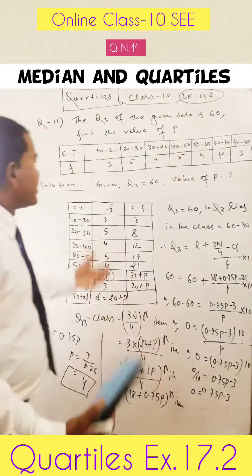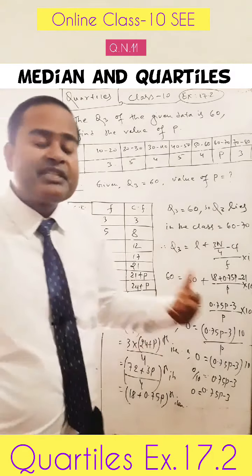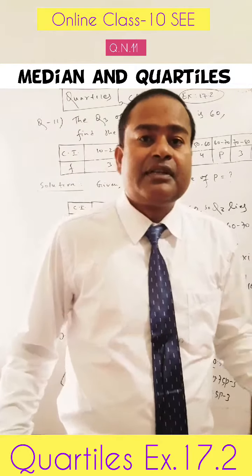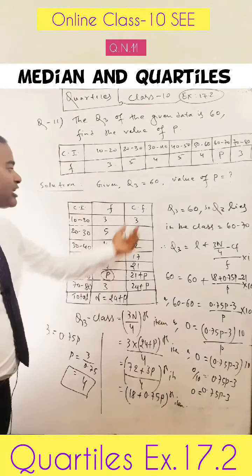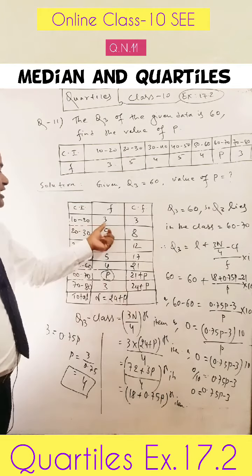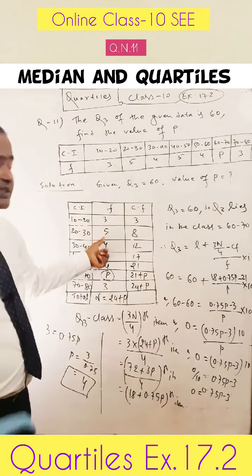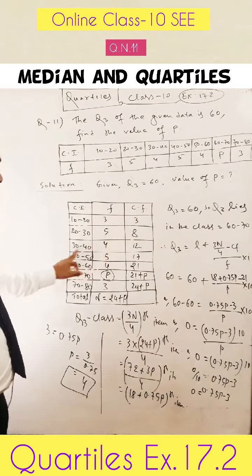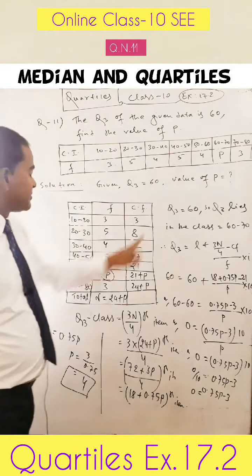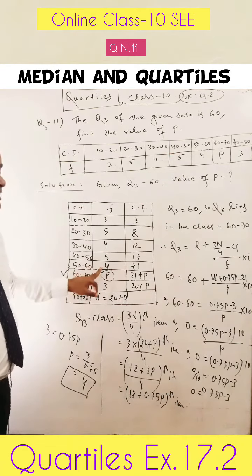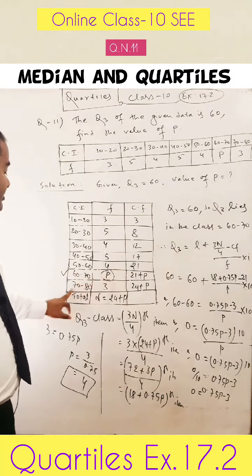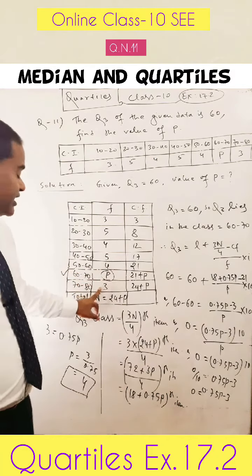Dear friends, in the previous video, in question number 10, we already discussed how to find the value of CF. So let's find out the value of CF. 10 to 20, frequency is 3. 20 to 30, frequency is 5. 30 to 40 is 4. 40 to 50 is 5. 50 to 60 is 4. 60 to 70, frequency is P. 70 to 80, frequency is 3.